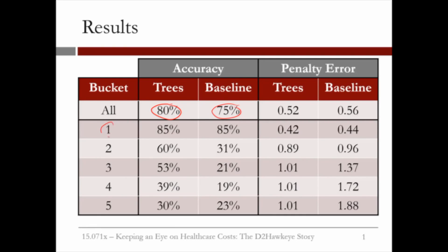For bucket 1 patients, the two models are equivalent. This suggests that the idea that healthy people stay healthy — which is the idea of the baseline model — is valid in the data. But for buckets 2 to 5, notice that the accuracy increases substantially: from 31% to 60%, it doubles; from 21% to 53%, more than doubles; and from 19% to 39%, doubles.